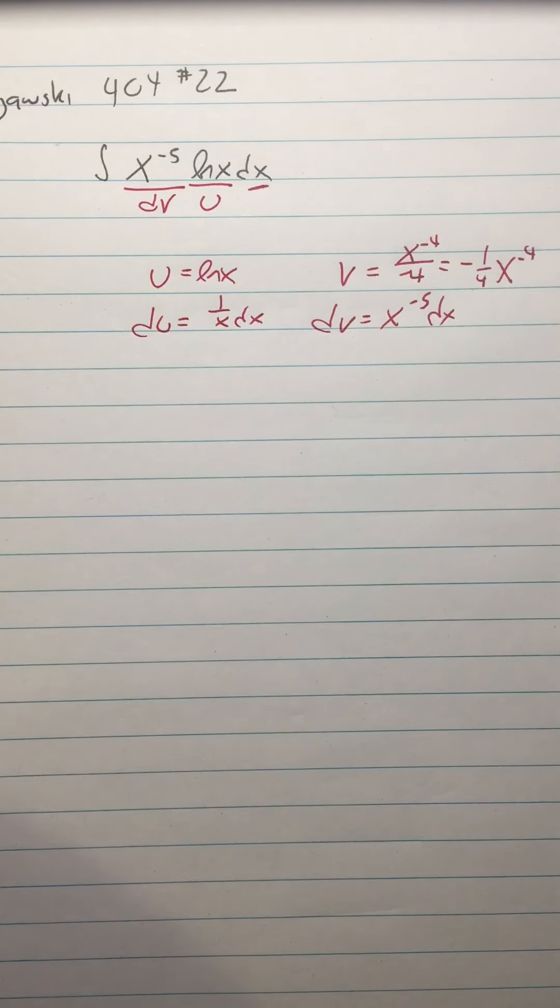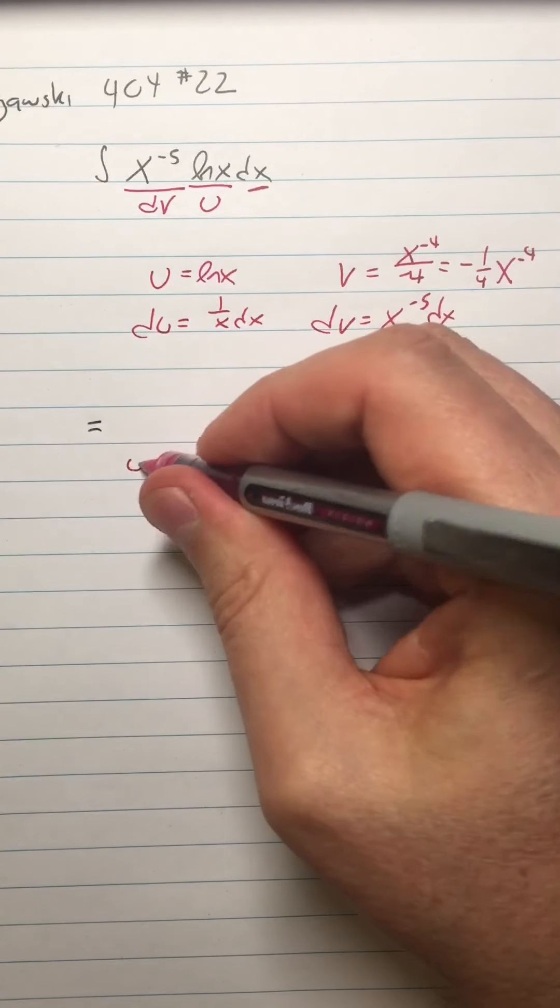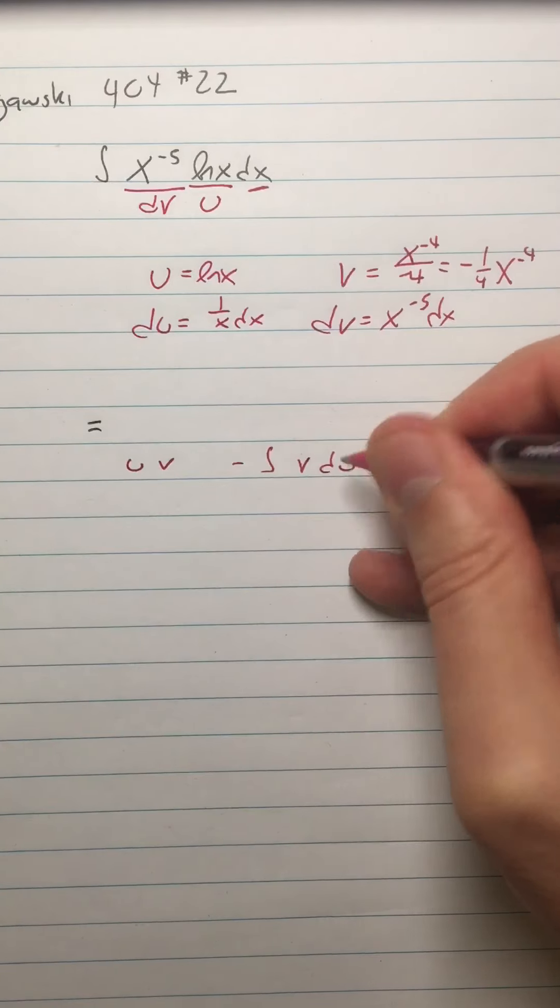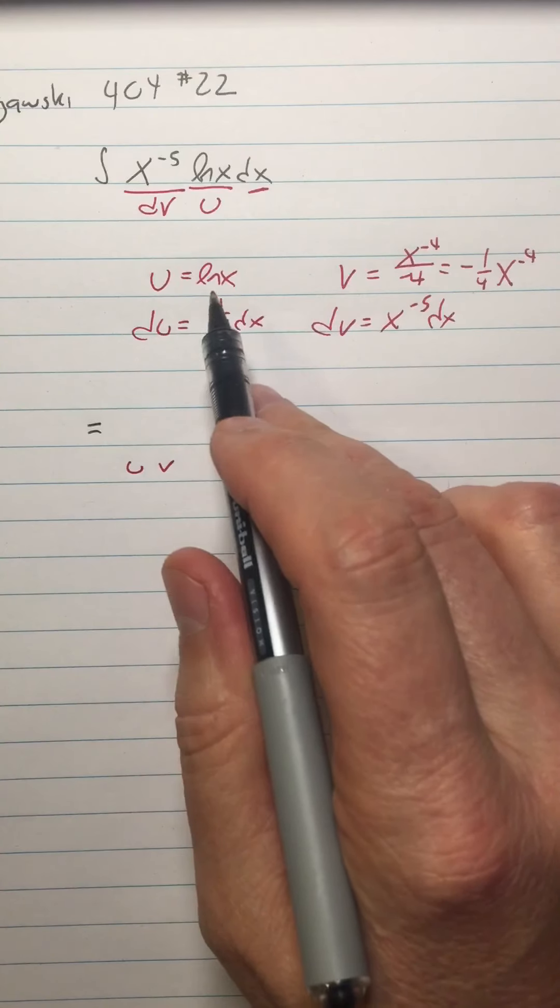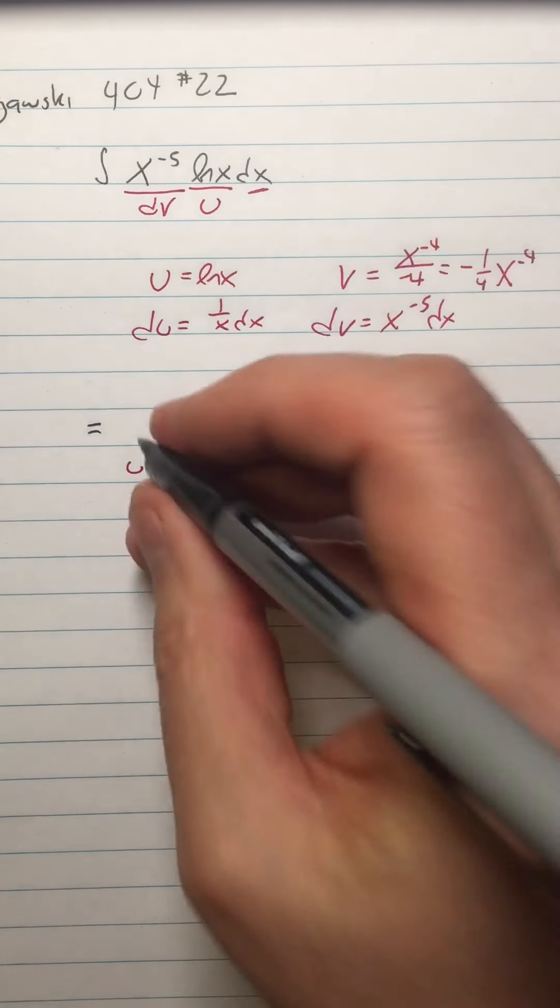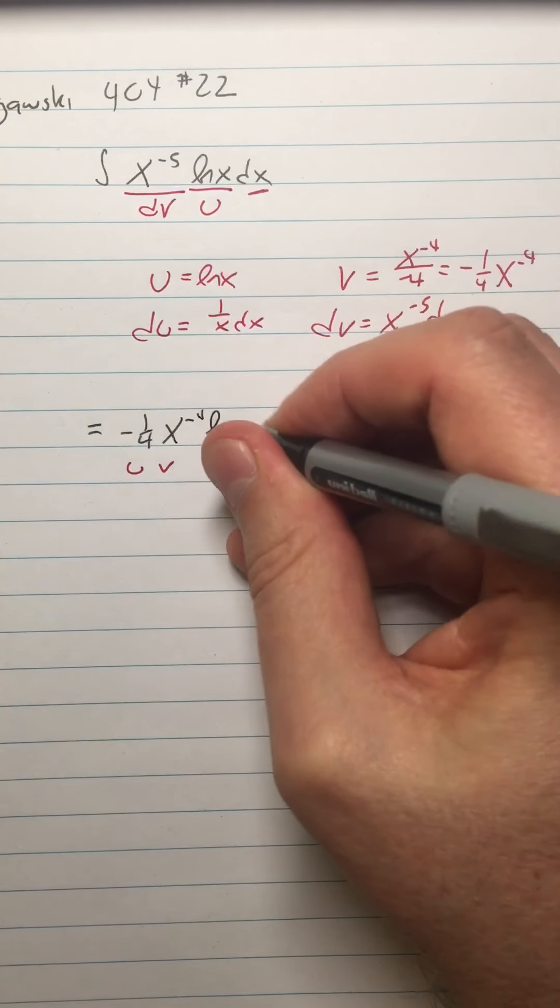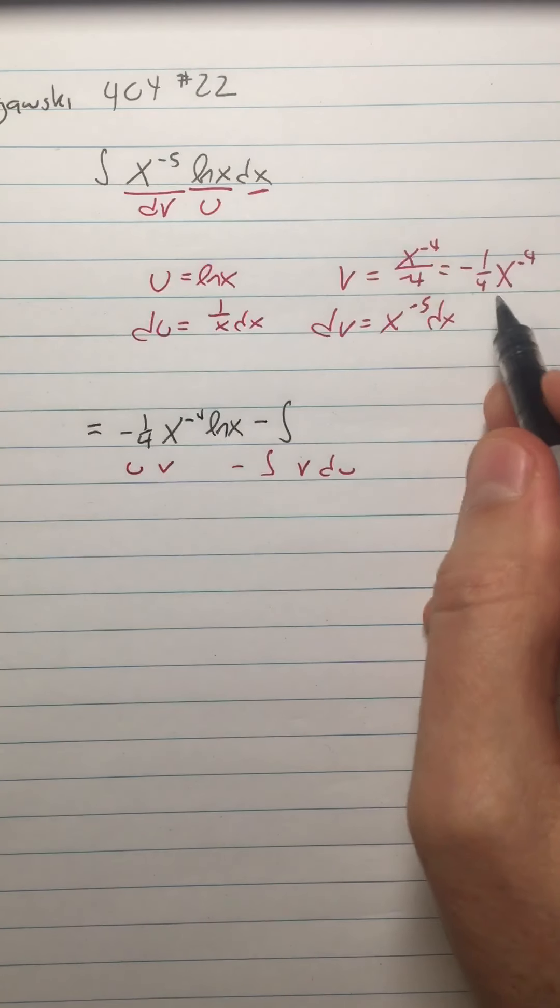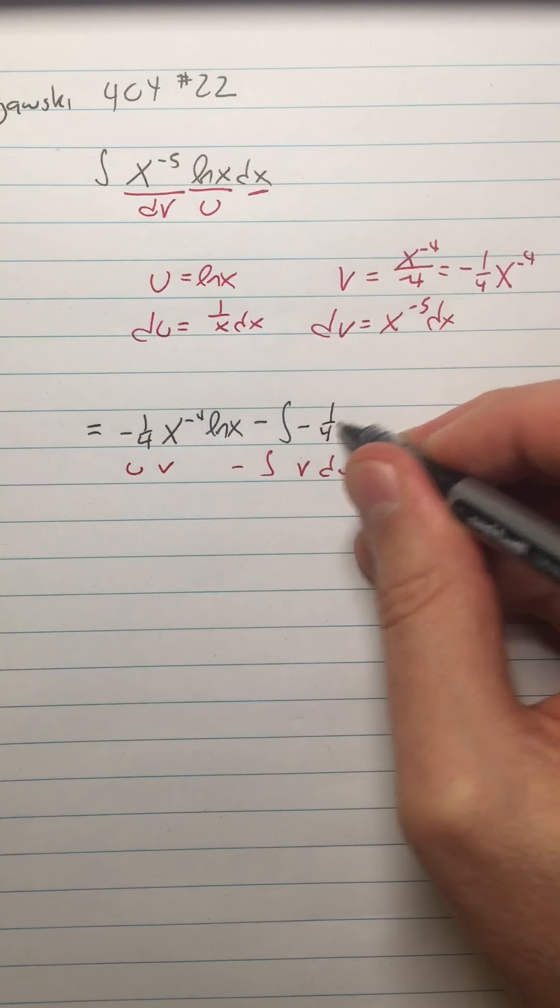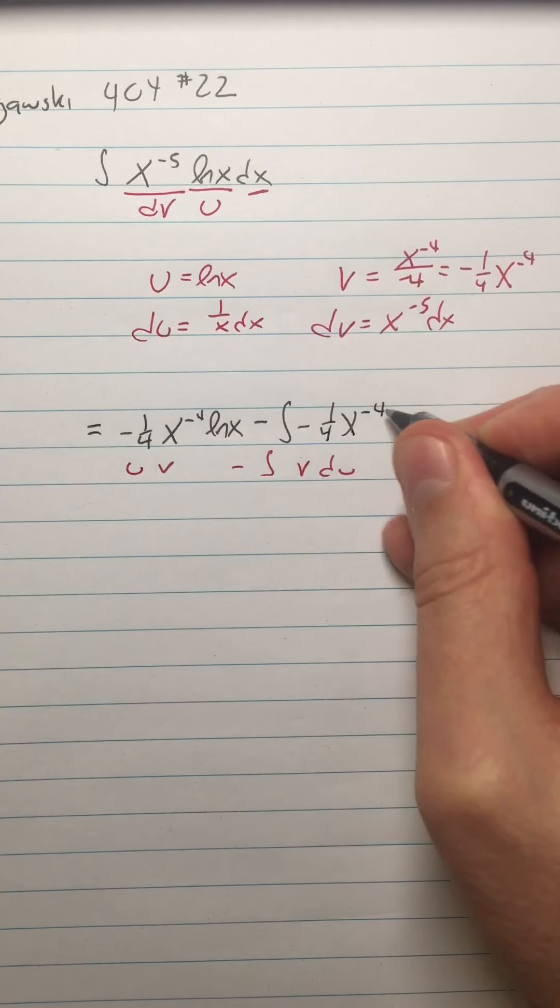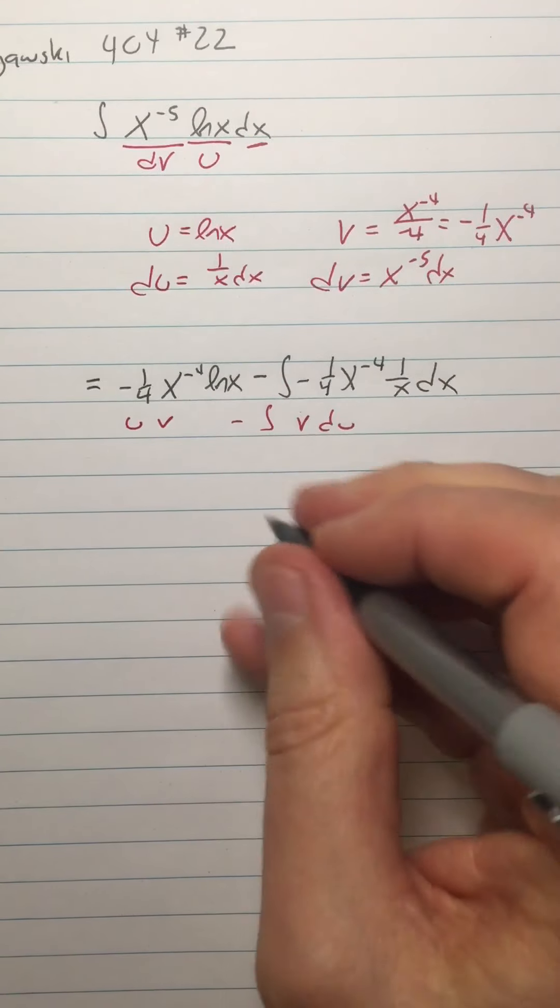So then my first next step is to rewrite our integral up here. I need to write it as uv minus the integral of vdu. So my uv, the nice thing about laying the chart out is you can just sort of follow it here. uv is going to be a negative one fourth. I'm just going to put these in a sort of a reasonable order. x to the negative fourth ln x minus the integral of, I need to do v du. So I'm going to have negative one fourth x to the negative fourth times one over x dx.